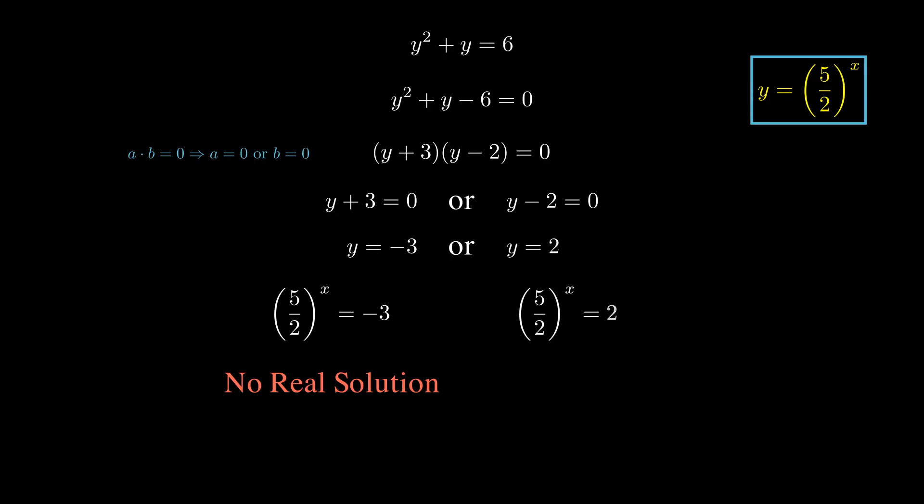And if we're only considering real solutions, (5/2)^x has no negative solution, at least not over the real numbers. (5/2)^x equals 2 does have a solution. We can rewrite this using a logarithmic equivalence. (5/2)^x equals 2 means the same thing as x equals log base 5/2 of 2. There's our solution.